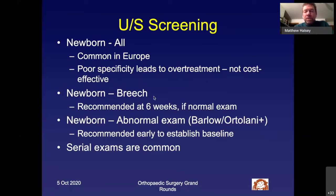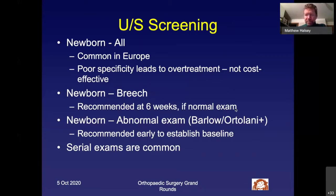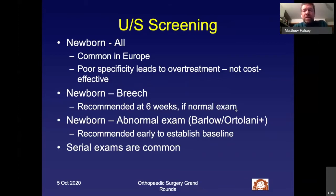Breech presentation is a fairly hard indication for ultrasound at six weeks, even if the exam is normal — and sooner if the exam is abnormal (Ortolani or Barlow positive). If you have an abnormal exam or abnormal ultrasound and are initiating treatment or watching closely, serial exams are indicated. I typically wait four to eight weeks between ultrasounds. For Ortolani-positive hips in a Pavlik harness I'll do two weeks; for Barlow-positive I'll do four weeks; for borderline or moderately dysplastic hips I'll wait two months.